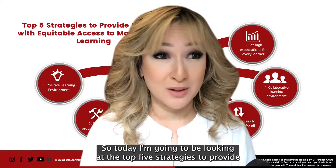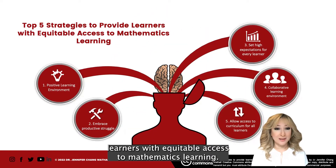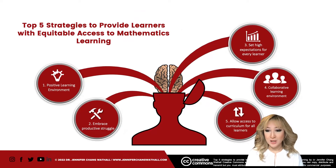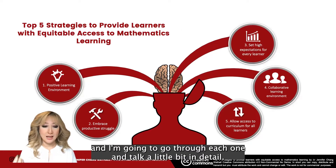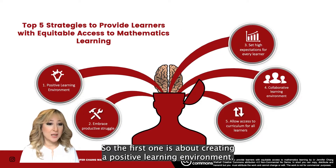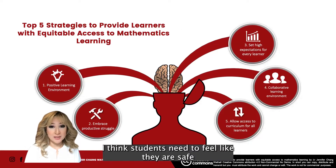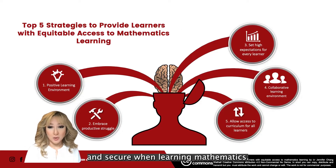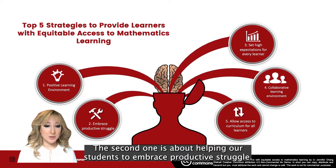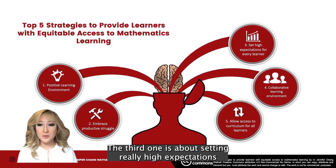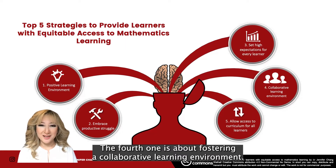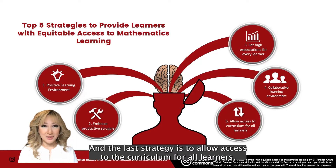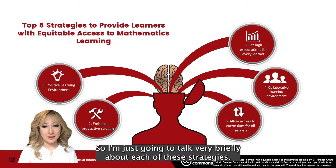Today I'm going to be looking at the top five strategies to provide learners with equitable access to mathematics learning. The first one is about creating a positive learning environment — students need to feel safe and secure when learning mathematics. The second is about helping students embrace productive struggle. The third is about setting high expectations for every learner. The fourth is fostering a collaborative learning environment. And the last strategy is to allow access to the curriculum for all learners.